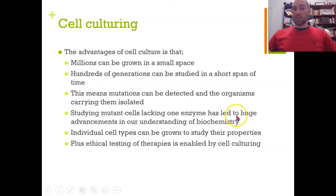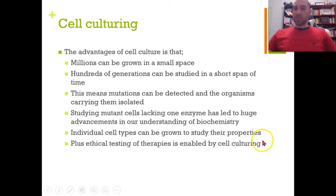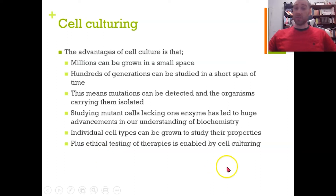You can study mutant cells lacking an enzyme, which has hugely increased our understanding of biochemistry. We culture cells, modify their DNA, and see what that does to them in a very scientific way. Individual cell types can be grown to study their properties — cancer cells, for example, which helps identify what has happened to them. We can also avoid some of the ethical issues involved in testing drugs or chemicals on animals by doing it on cells instead, rather than, for example, rubbing shampoo in a bunny's eyes.